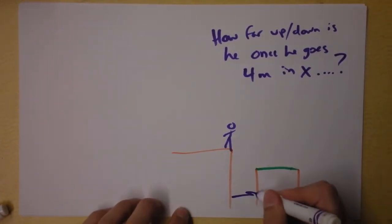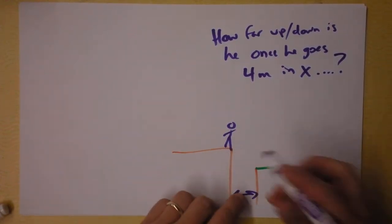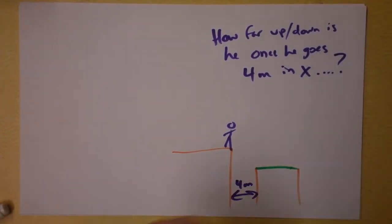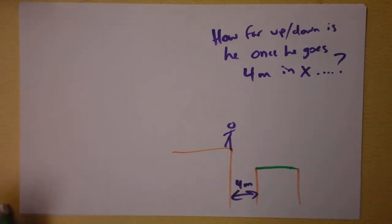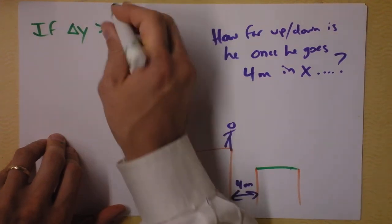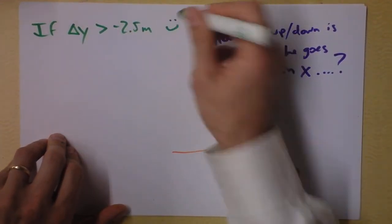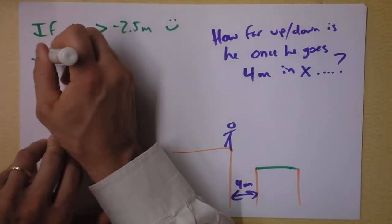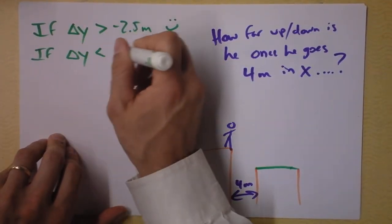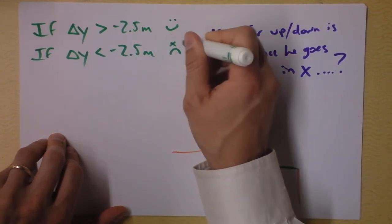That's our challenge. I know that if he leaves with a velocity in the x direction, he will ultimately go 4 meters in x. That's the plan. If, though, if delta y is greater than negative 2.5 meters, then he lives. If delta y is less than negative 2.5 meters, this will not be very much fun for him.